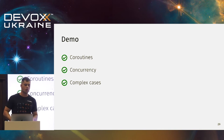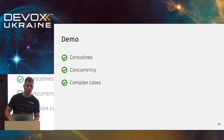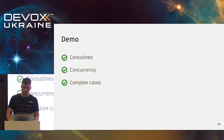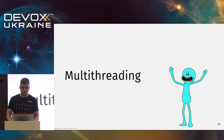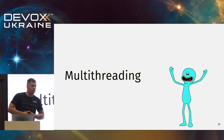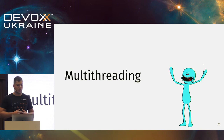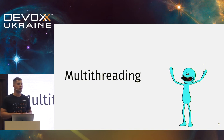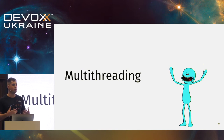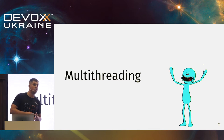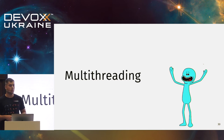We've done the fun part and now we go to the sad part: multi-threading. Everything I showed you before could run on a single thread, on a single core, even doing concurrent work. But in modern systems we have multiple CPUs and we want to use all of them.